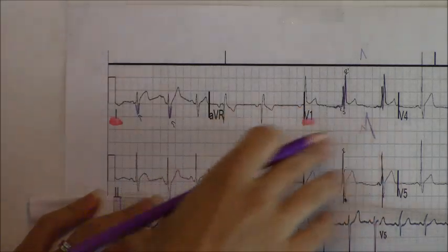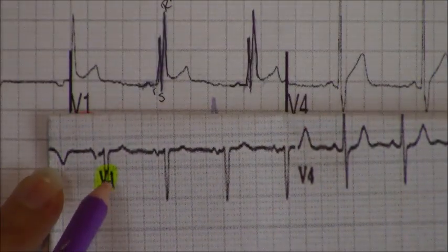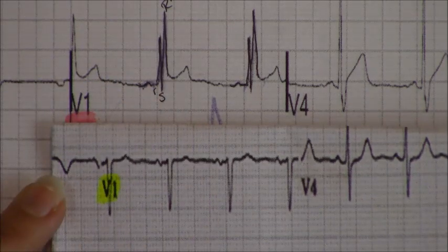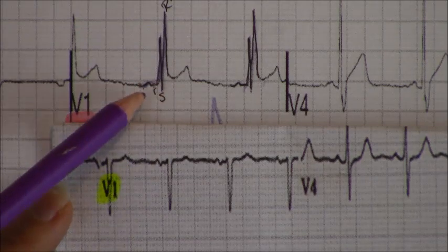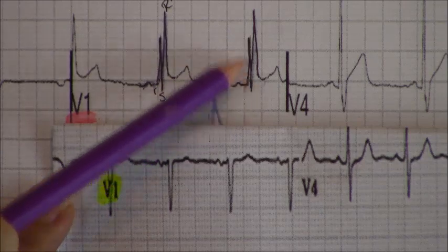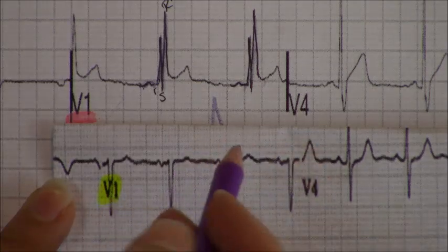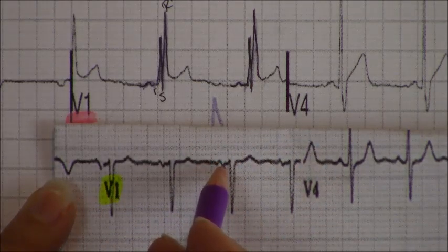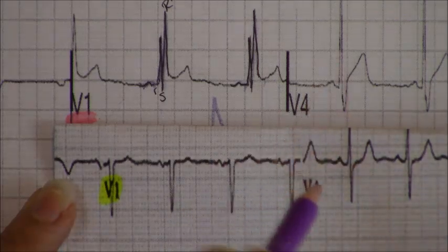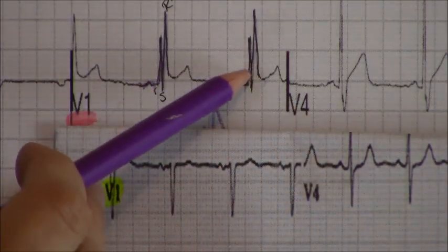Now let me quickly show you the difference between V1 with that M shape compared to a normal EKG. The one on the bottom is your normal EKG in the view of V1, and the top one is the abnormal one with the right bundle branch block. Over here you have your P wave, your QRS, and then your R prime — and it makes the M pattern. But when you look at V1 in the normal EKG, you just have a P wave, a QRS, and then a T wave — it's downward deflected, which is normal. But in the RBBB it's upward deflected, and you have two R waves.